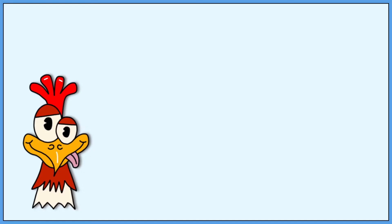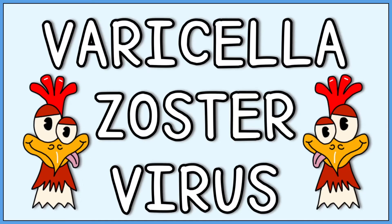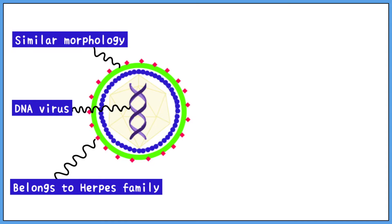Today we are going to discuss the causative organism of a common childhood illness: chickenpox. The infection is caused by the VZV, or varicella zoster virus. This virus belongs to the herpes family and is a DNA virus, very similar to the herpes simplex virus in its morphology.